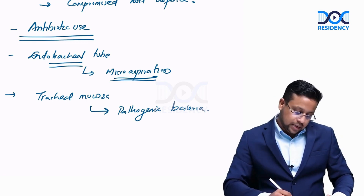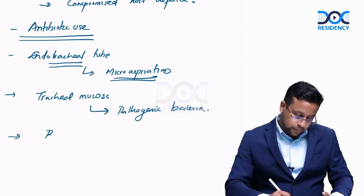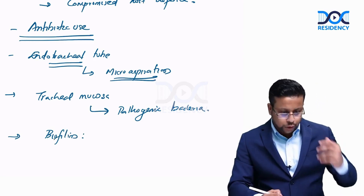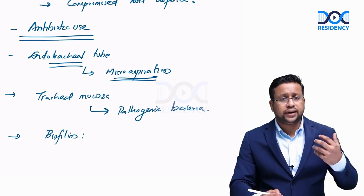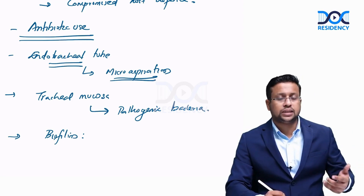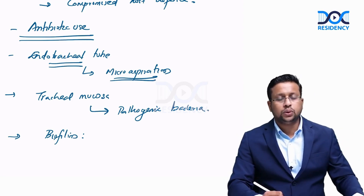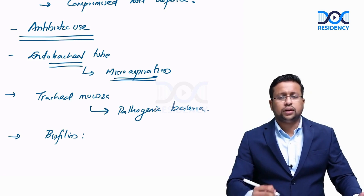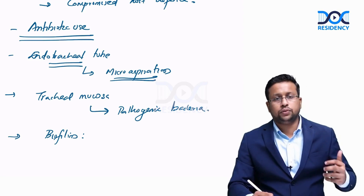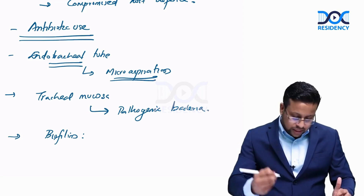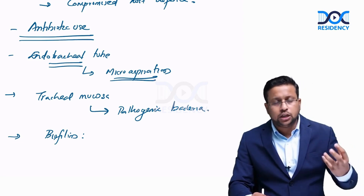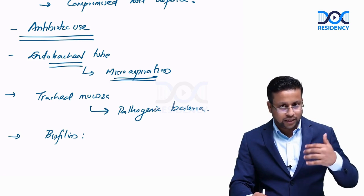In addition, bacteria can form a biofilm around the endotracheal tube. Within the biofilm, these organisms are protected from both host defenses and antibiotics — the host immune system and antibiotic therapy cannot properly control the infection. This biofilm can sometimes be dislodged during suctioning and reach the lower respiratory tract.